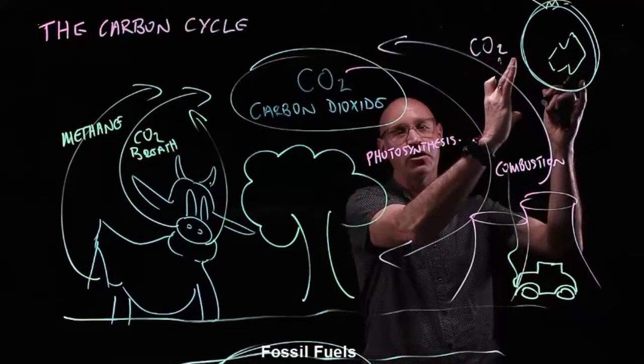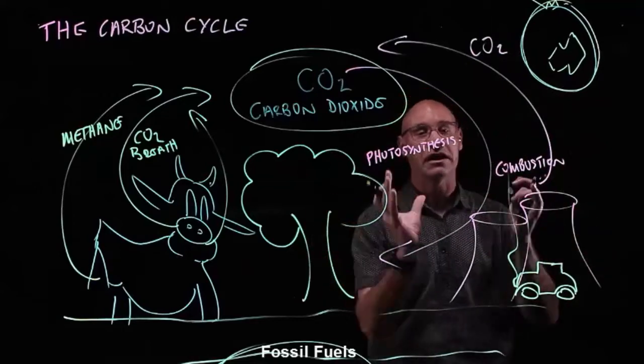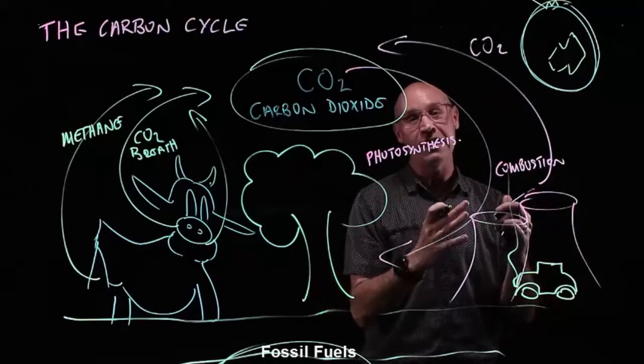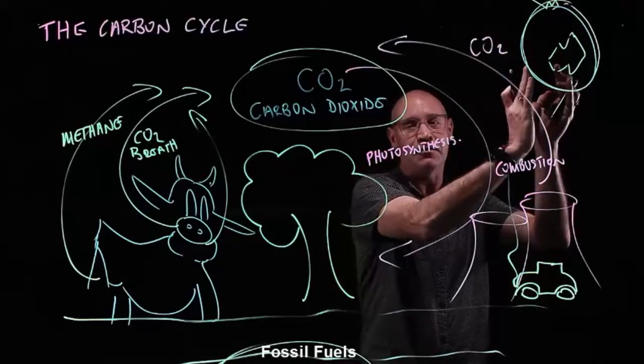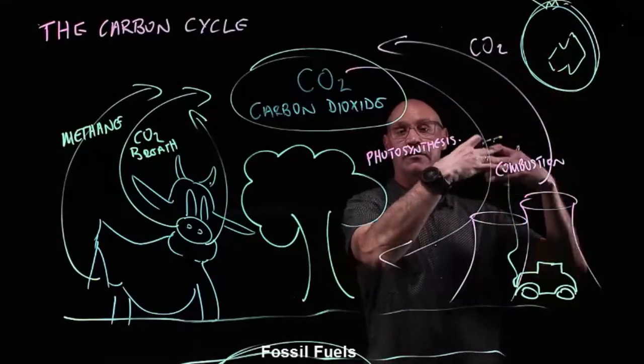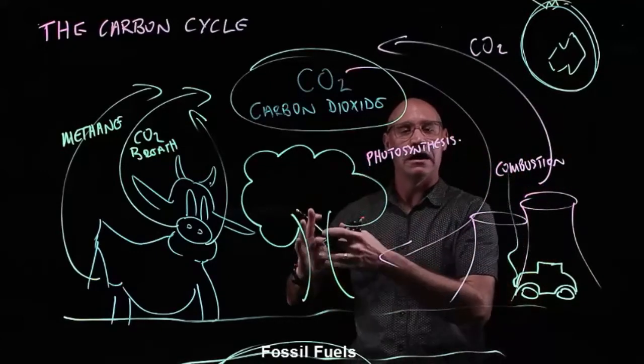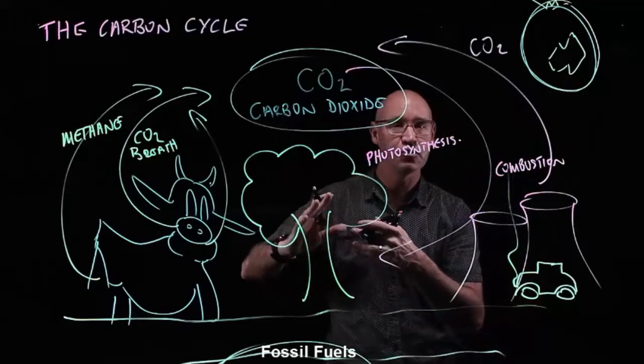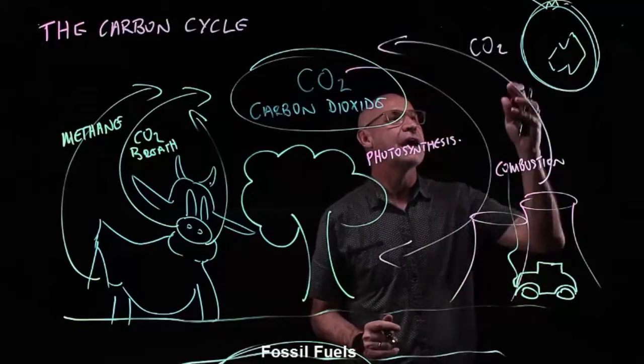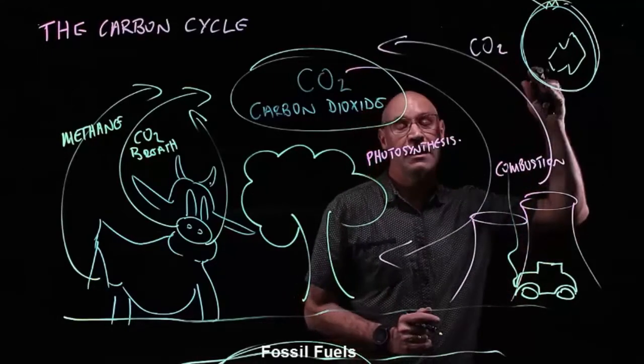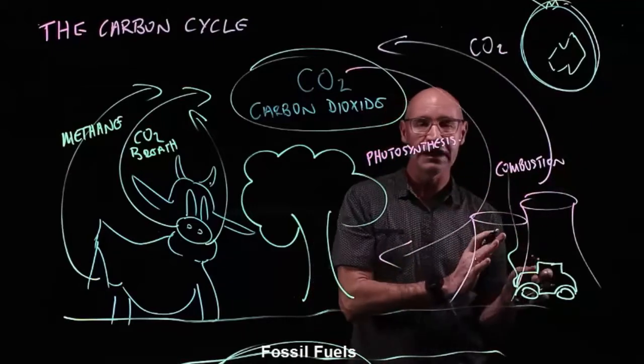However, when we've got more carbon dioxide than we should have in the atmosphere, well, that acts like an extra doona, or a greenhouse, and more and more of that heat is trapped within the atmosphere, and the Earth gets warmer. And that's certainly what we're seeing. There's a significant correlation between the amount of carbon dioxide in the atmosphere from human activities and the increasing average global temperatures. And that's why they call it a greenhouse effect.